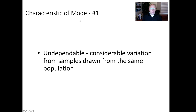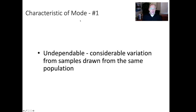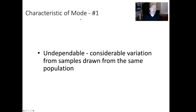The first characteristic of the mode: if we were drawing random samples from a population, the mode wouldn't be dependable at all. If I wrote a few lines of Python code that drew random samples, we'd clearly see that the mode would bounce all over the place, while the mean would vary much less across samples.